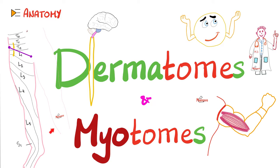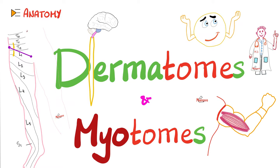What does derma mean? It means skin. What does myo mean? Muscle. How about tome? Well, what does the word anatomy mean? Because it also has tome in it. Tome means to cut, and ana means up. So anatomy literally means to cut you up. So dermatome is a slice of skin, and myotome is a slice of muscle — your skin supplied by a spinal segment of your spinal cord, and a group of muscles supplied by a segment of your spinal cord.